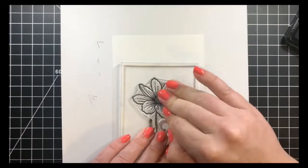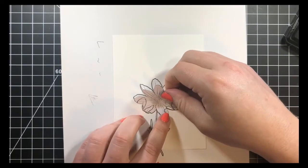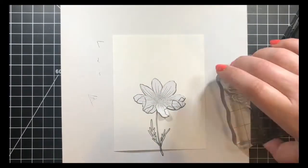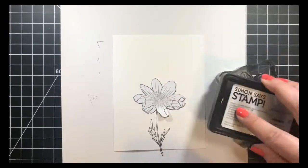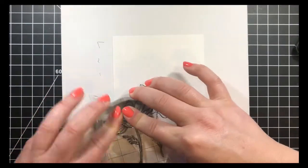I started with this larger flower right there in the center of my panel. I'm using Eclipse masking paper just to mask out the flower itself. The stem and the leaves were pretty intricate, so I just figured I'd be a little careful when I stamped my other images.